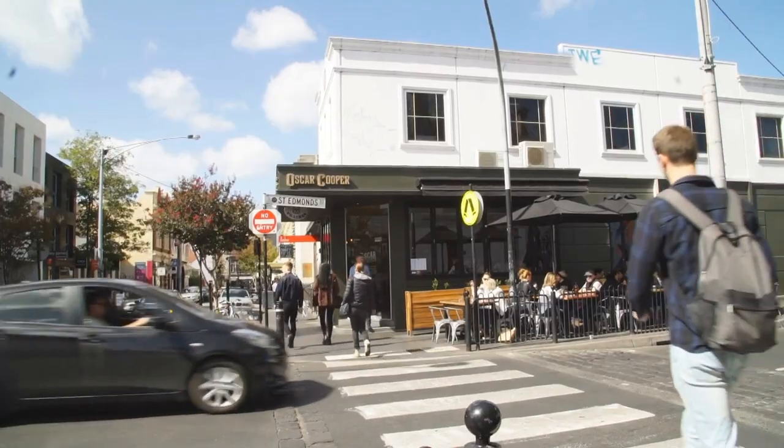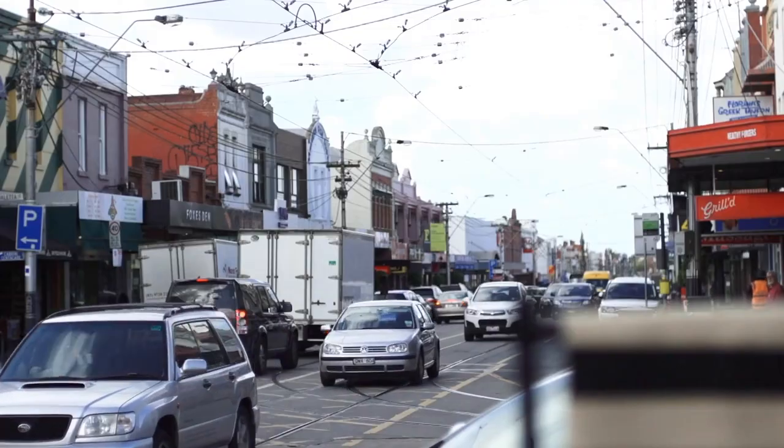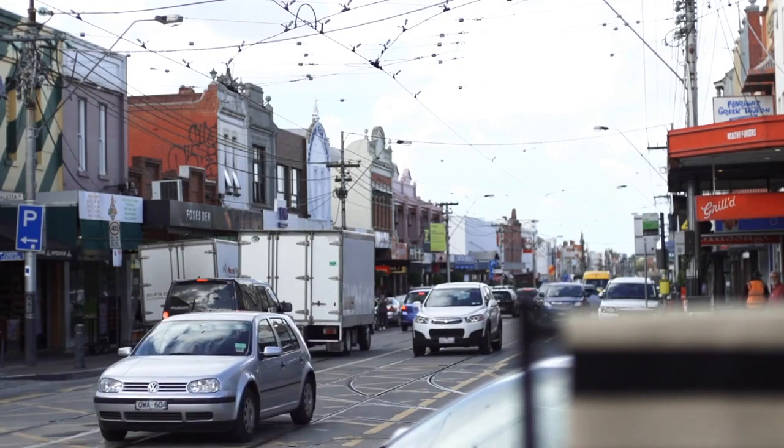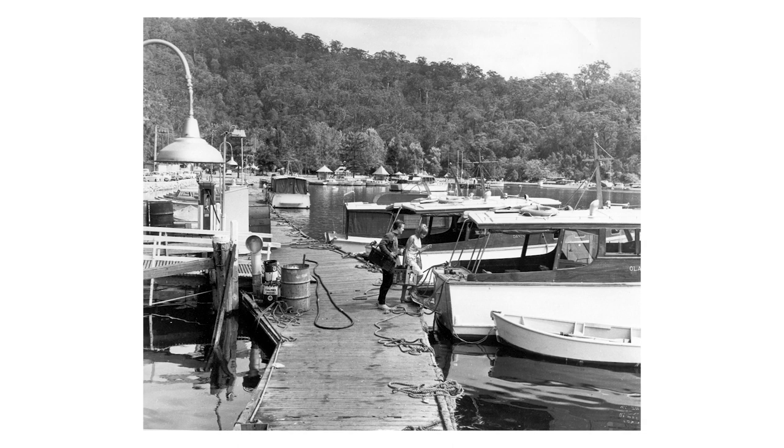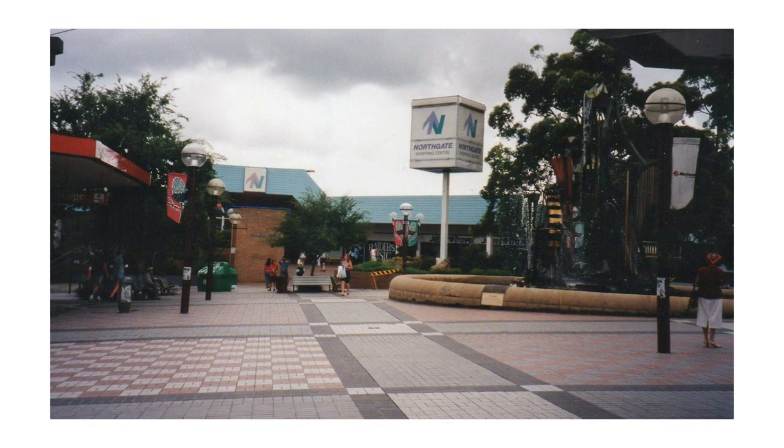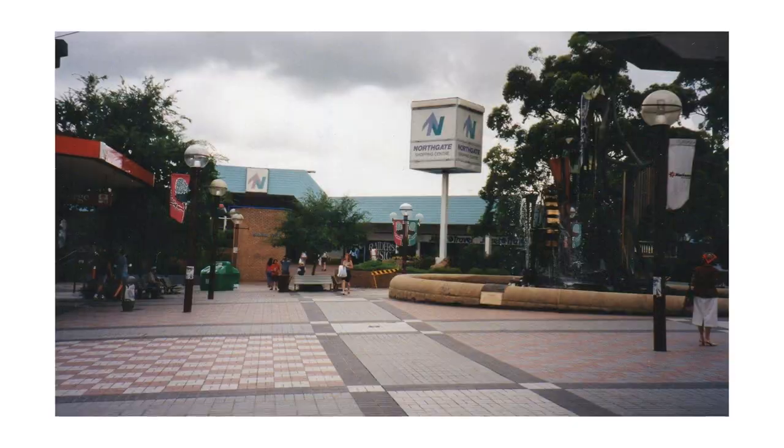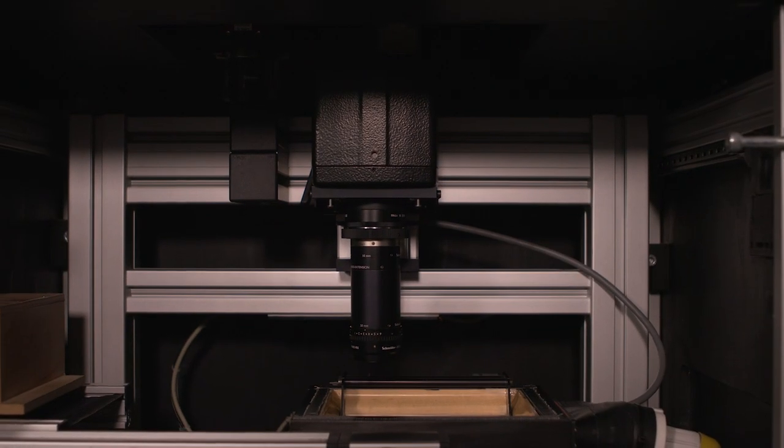For years, councils all around Australia have served local communities by generating and preserving valuable community records and archives. From the early 1970s through to the late 90s, councils preserved these records by transferring them to microfilm and microfiche for archival purposes.